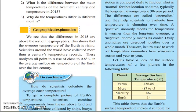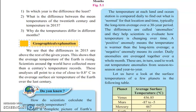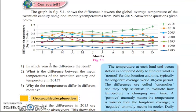We see that the differences in 2015 are above the rest of the given years, which shows that the average temperature of the earth is rising. Scientists around the world have collected more than centuries of temperature records, and these analyses all point to a rise of close to 0.8 degrees Celsius in the average surface air temperature of the earth over the last century.